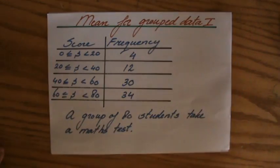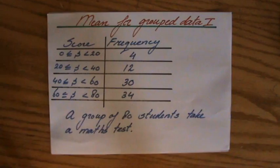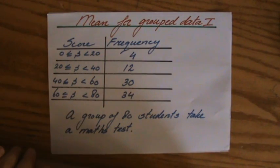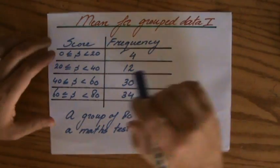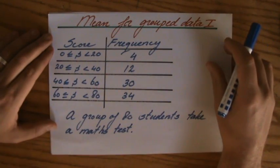All right, it's good to see you again because these are typical questions for your IGCSE or GCSE exam paper where we have to interpret a grouped frequency table. What does that mean?